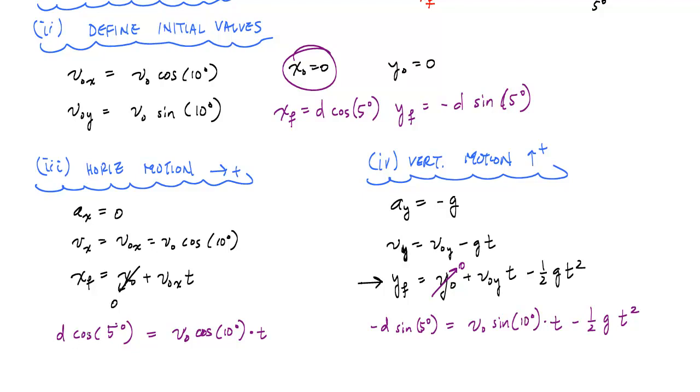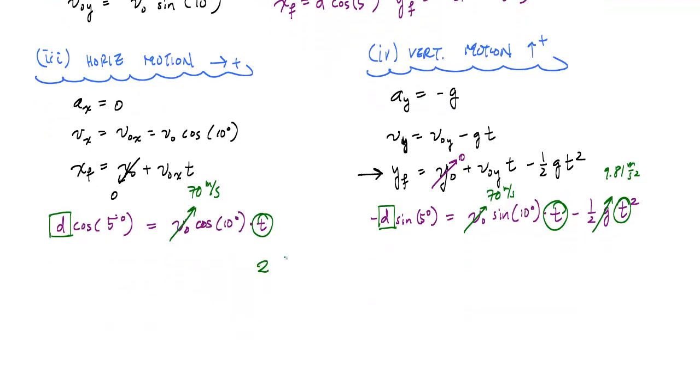So here, this d cosine 5 degrees equation is this horizontal position equation is my first equation. And here, my vertical position equation is my second equation. If I look at this right here, I have one unknown is d. I know cosine, I know v0, this is just 70 meters per second. I know cosine of 10 degrees. And then this t is time is also an unknown. And if I look over here, I have d as my unknown. I know sine of 5 degrees. I know this is 70 meters per second. Here's my time again as an unknown. My g is 9.81 meters per second squared. And then here's time again. And I have, essentially, now I have two equations, two unknowns.